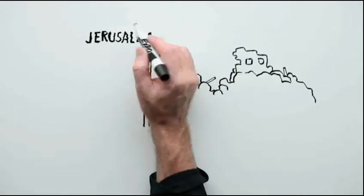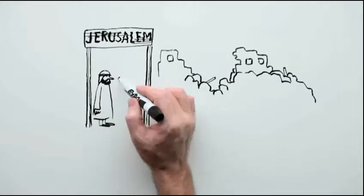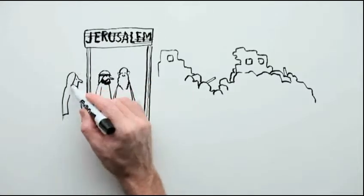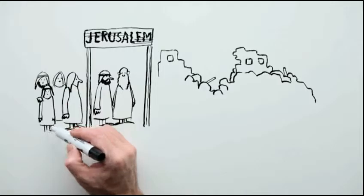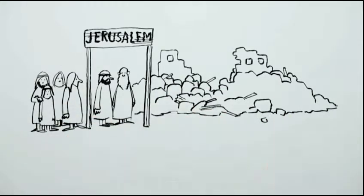After living in exile in foreign countries for many years, the Israelites were allowed to return to their homeland. As they returned home to their capital city of Jerusalem, they found that the wall that had once protected the city had been completely destroyed.